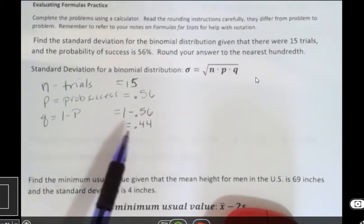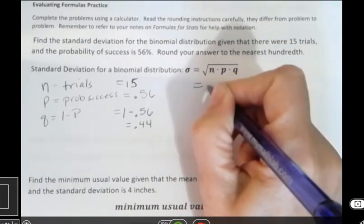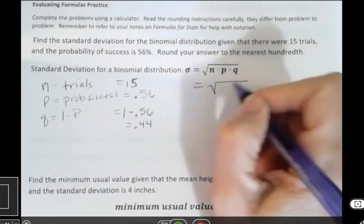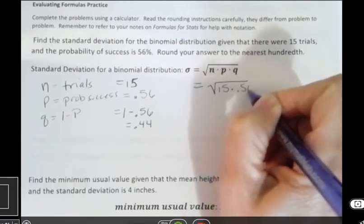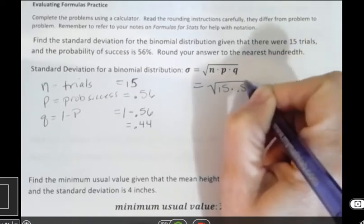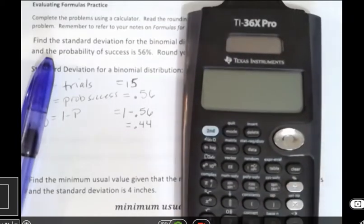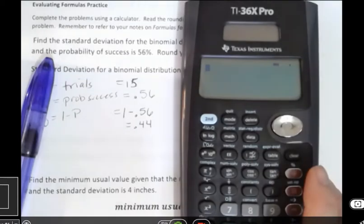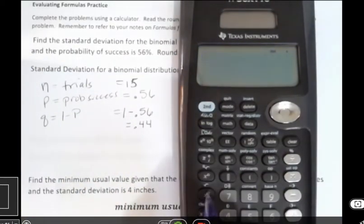And then Q is 1 minus P, which is 0.44. And so my problem here is going to be to simplify the square root of 15 times 0.56 times 0.44. That needs to go into the calculator, and I just want to make sure that everybody can do that successfully. So I'm going to turn that on, I'm going to clear it, and then we have the second function, square root symbol.